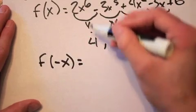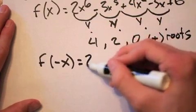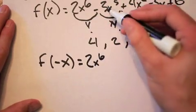The rule of thumb is, if the power is even, the sign will stay the same. If it is odd, the sign will change.